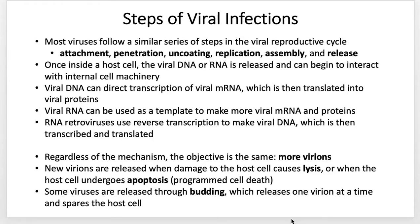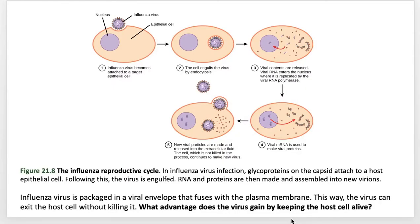Another way viruses can release their progeny is through a process called budding, which is more advanced in an evolutionary or adaptive sense. Budding happens when a virus-infected cell releases one virion at a time. By doing that, the host cell is spared. The host cell isn't necessarily healthy — it's virus-infected and often operating at a suboptimal level — but by not exploding and dumping all virions at once, the cell can live a little bit longer.